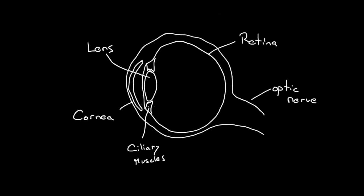One of the most precise optical instruments is the human eye. Up front you have the cornea, which acts as the main lens and does most of the bending of the light. You also have the inner lens, which is more adjustable and makes fine corrections. Ciliary muscles can exert a force on this inner lens and change its shape depending on how far away the object is, ensuring the image is formed right on your retina — the back wall that acts as the screen of your eye.